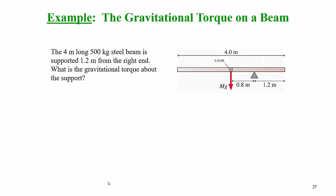Let's look at a numerical problem where we calculate the gravitational torque. We have a 500 kilogram steel beam. The center of mass of that steel beam is right at the center — it's 4 meters long, so the center of mass is 2 meters from either end. It's supported by a fulcrum that's 1.2 meters from the right end of the beam.